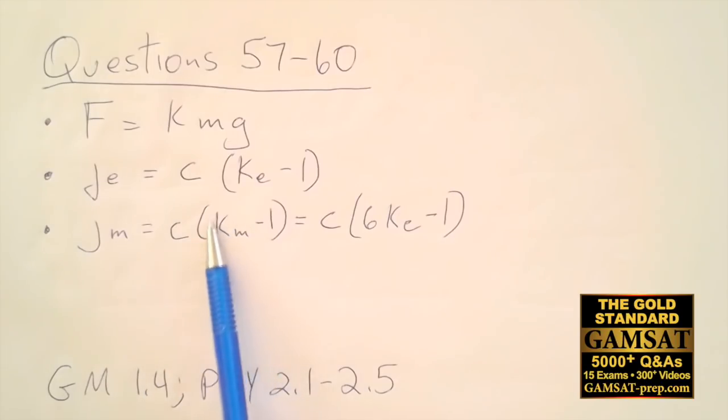That means that answer choice B is correct. And also note that this is the same for jm. For the moon, km would have to be some value above the number 1 in order for this to be a positive number. This reaffirms that answer choice B must be correct.